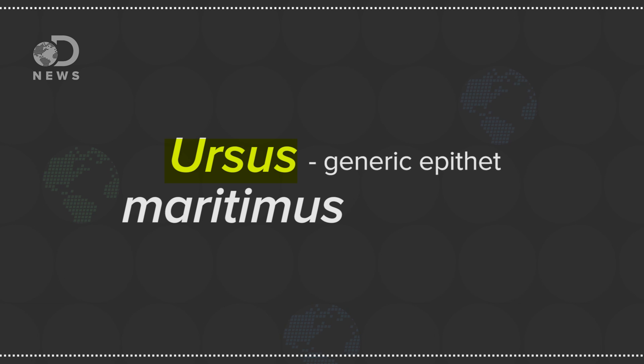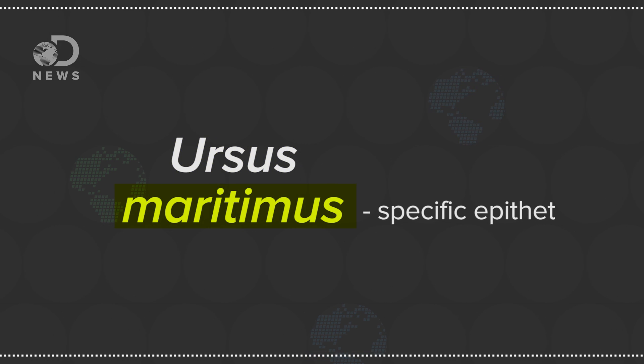The first name is called the generic epithet, and is usually the genus, while the second is a specific epithet, or the species. Sometimes there's even a third name for a subspecies included.